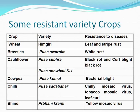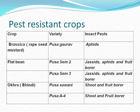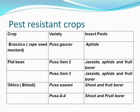Pest resistant crops: in Brassica, the Pousa Gaurav variety is resistant to aphids. Pousa Sem 2 and Pousa Sem 3 are resistant to jassids, aphids, and fruit borer. Similarly, Pousa Sawani and Pousa A4 varieties of bhindi are resistant to shoot and fruit borer. These are examples of insect pest resistance.